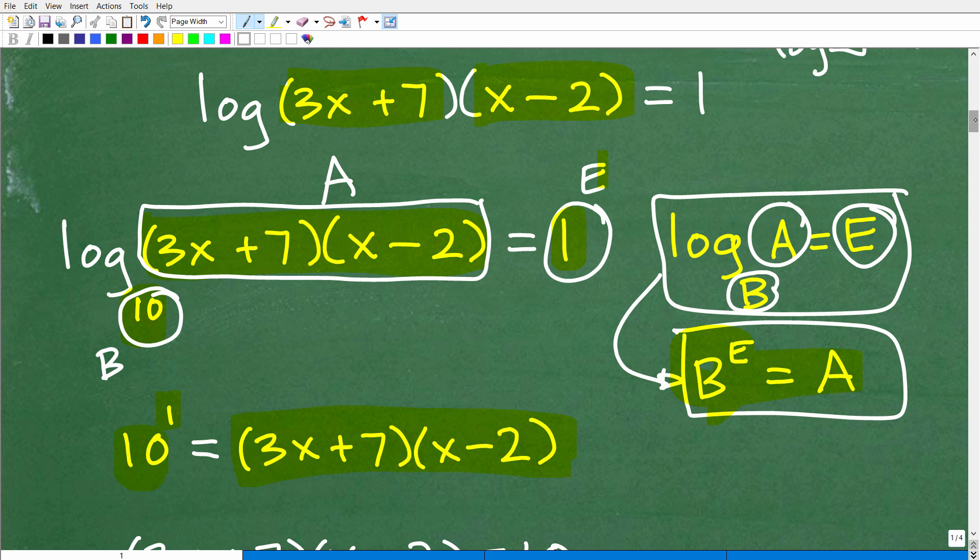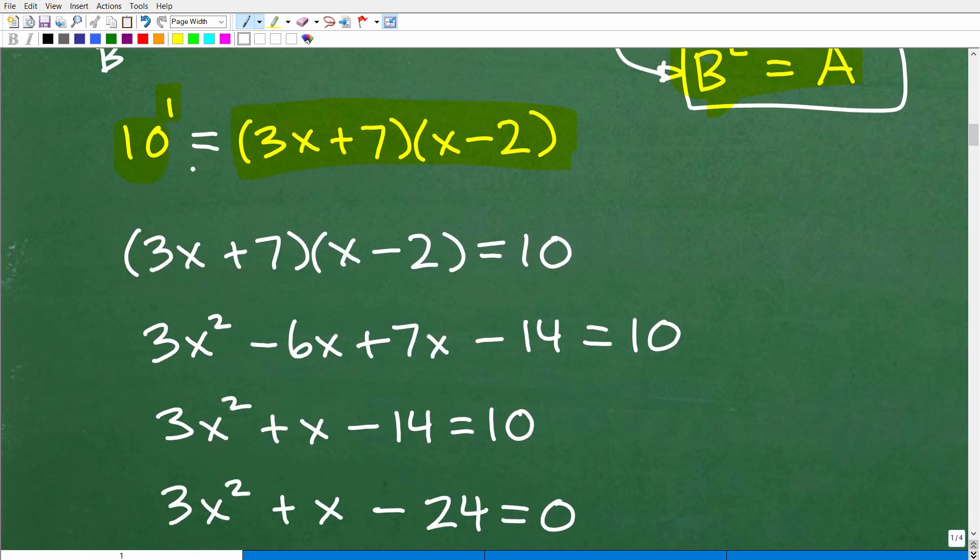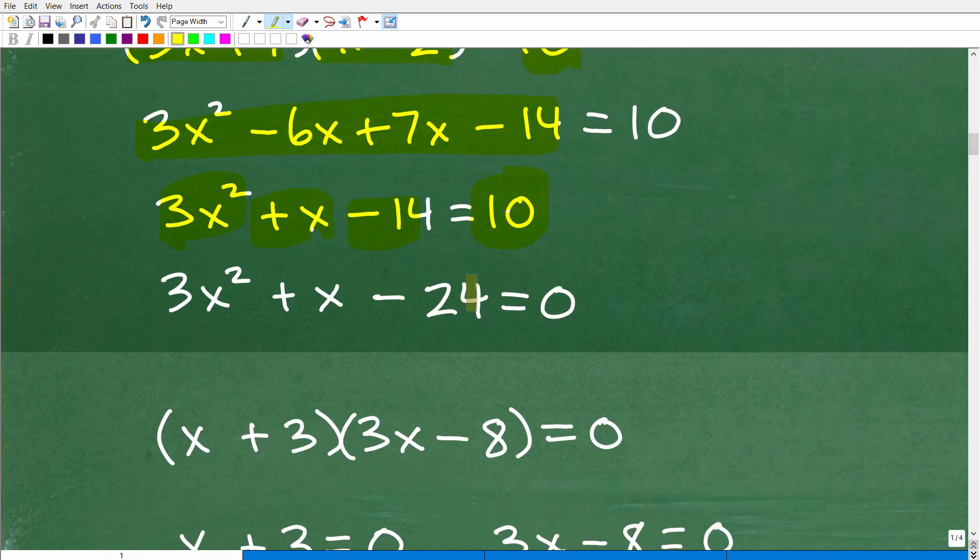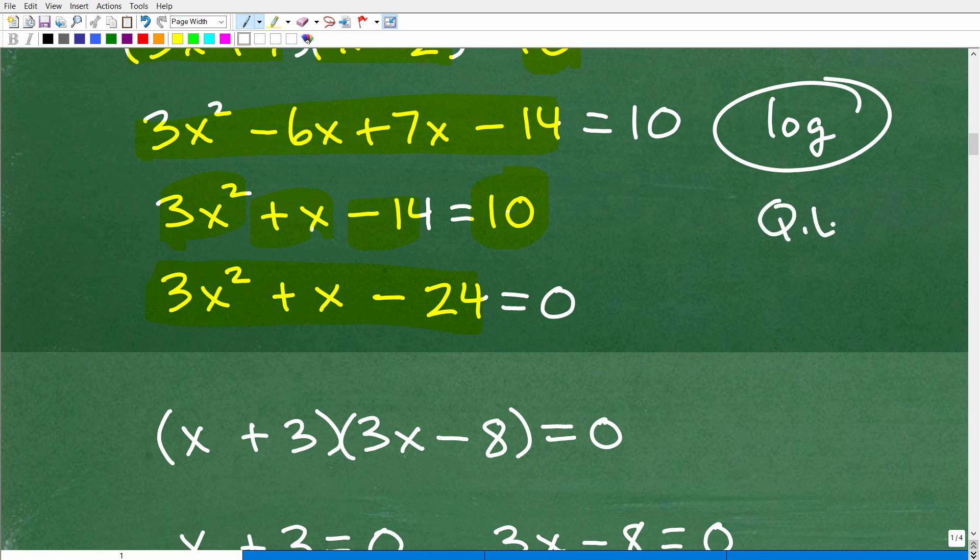So 10 to the first equals (3x + 7)(x - 2). It looks like I have a lovely quadratic equation I need to solve. What I need to do here is multiply these two binomials. When I do that, I get 3x^2 + x - 14 = 10. So now I have to solve this quadratic equation. I'm going to have to set this thing equal to zero. You're like, oh my goodness, I'm going to have to solve a quadratic equation. Yes, math builds upon itself. If you're at the level of solving logarithmic equations, you should have already mastered quadratic equations.